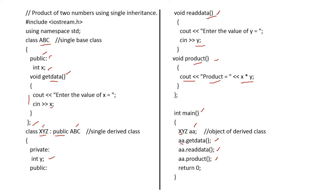That's all in single inheritance. ABC is the base class and XYZ is the derived class. XYZ is derived from base class ABC — that is why class XYZ colon, then access specifier and the base class name. The key thing to notice is that we are creating the object for only the derived class. With the help of that object, all the base class and derived class member functions will be executed.